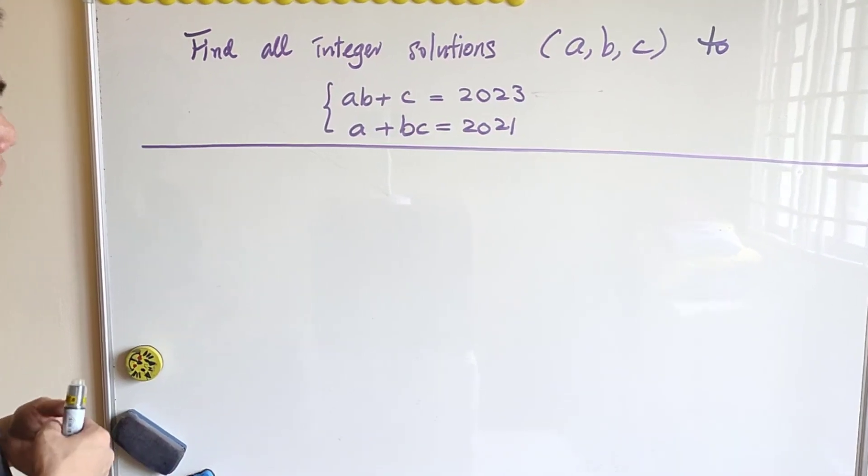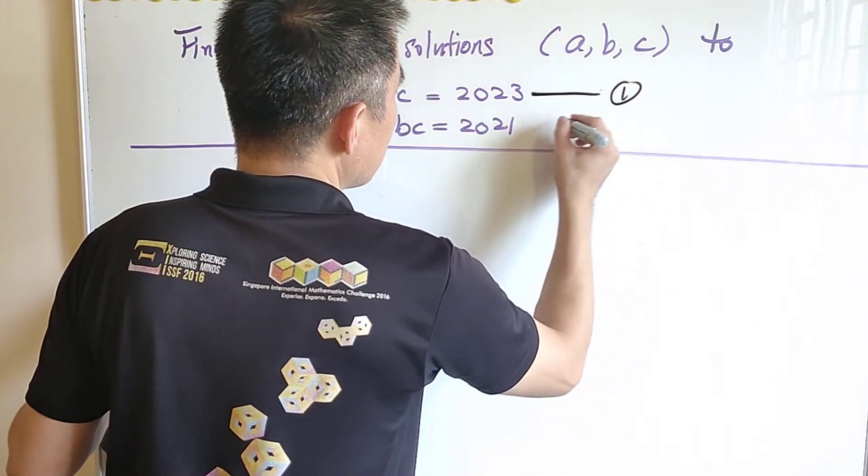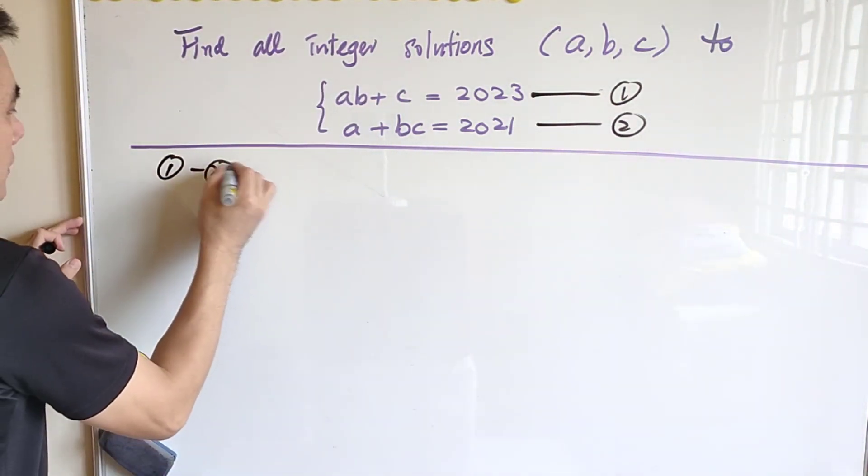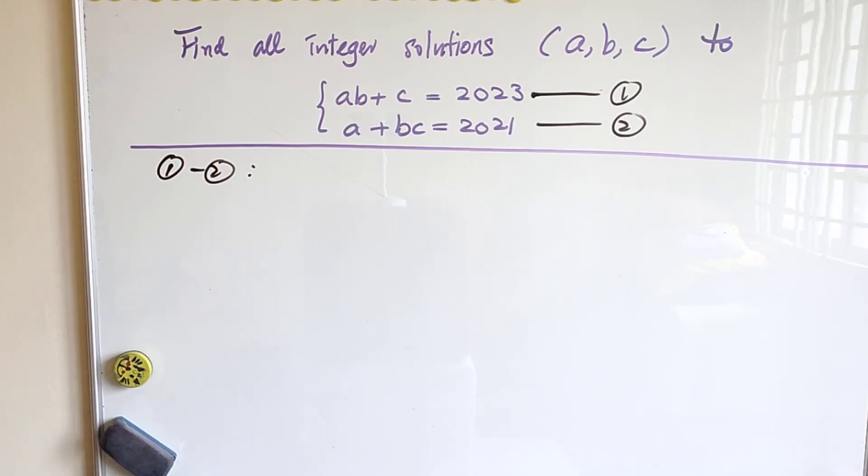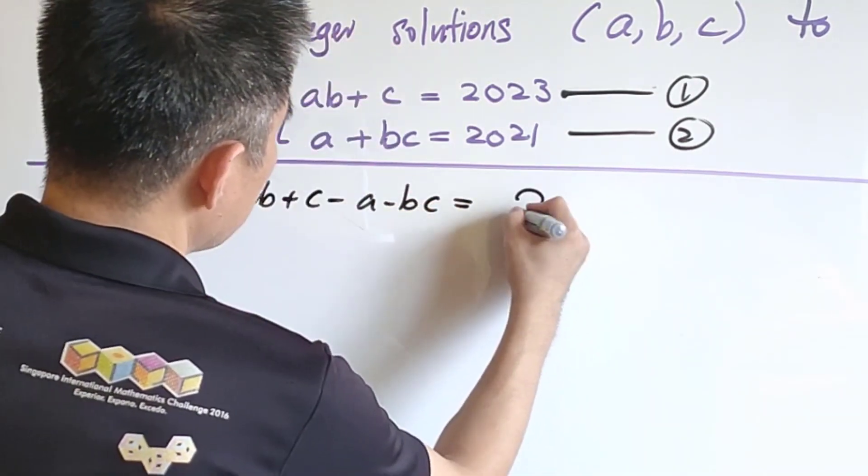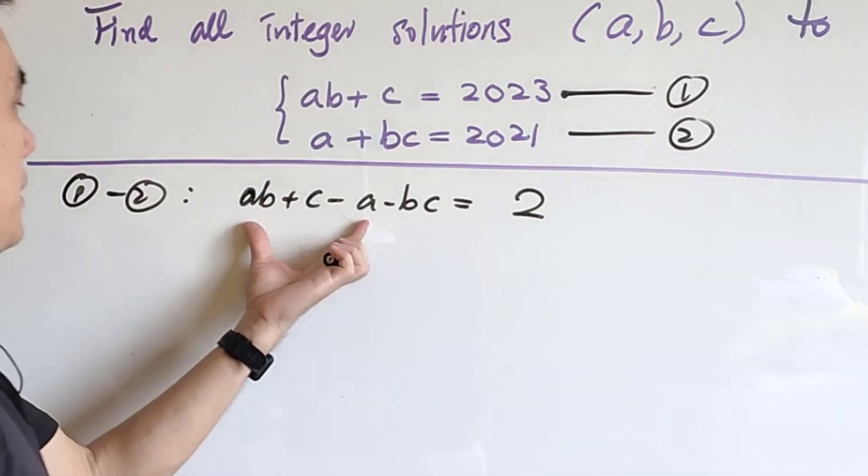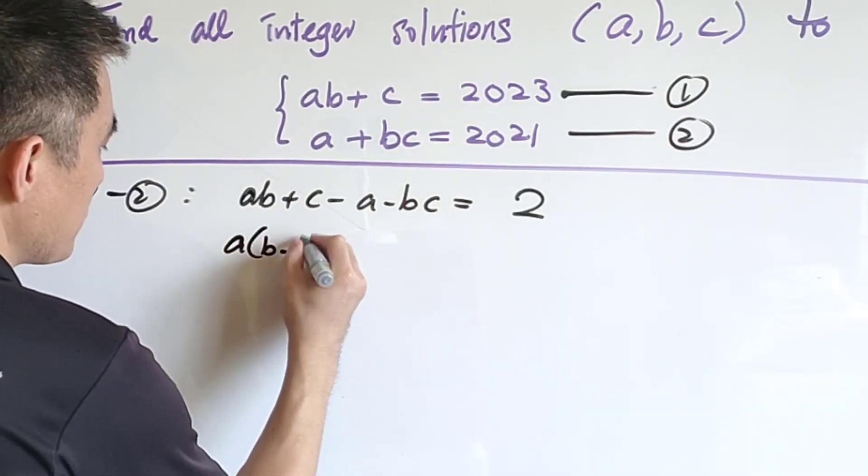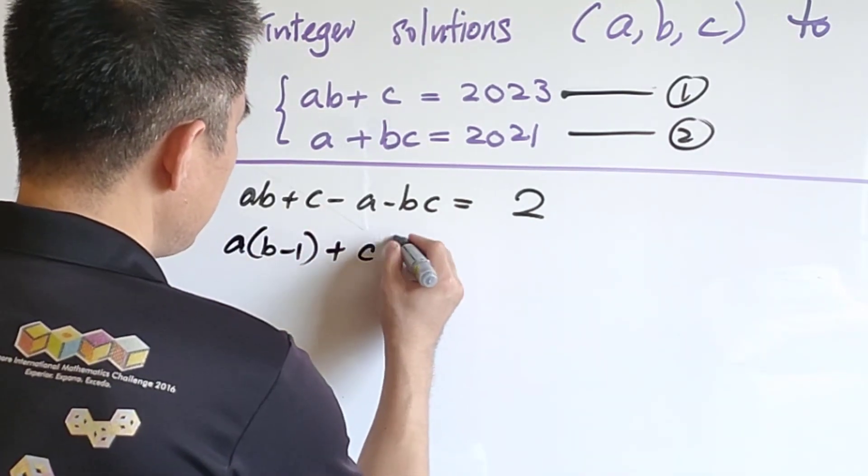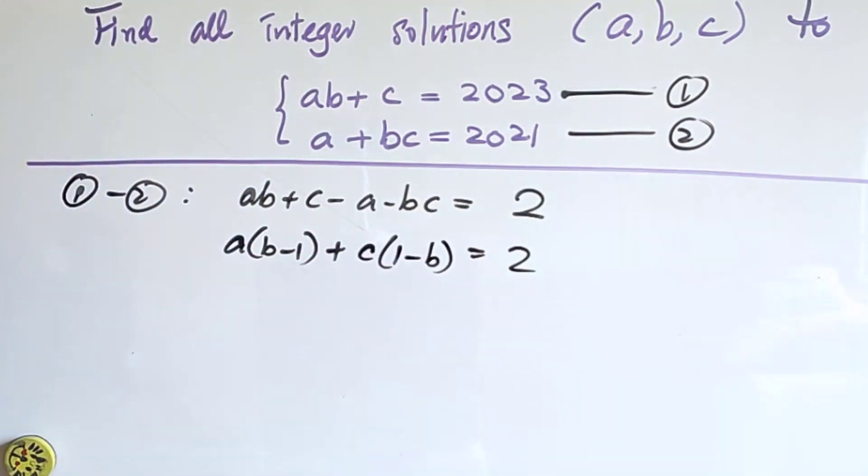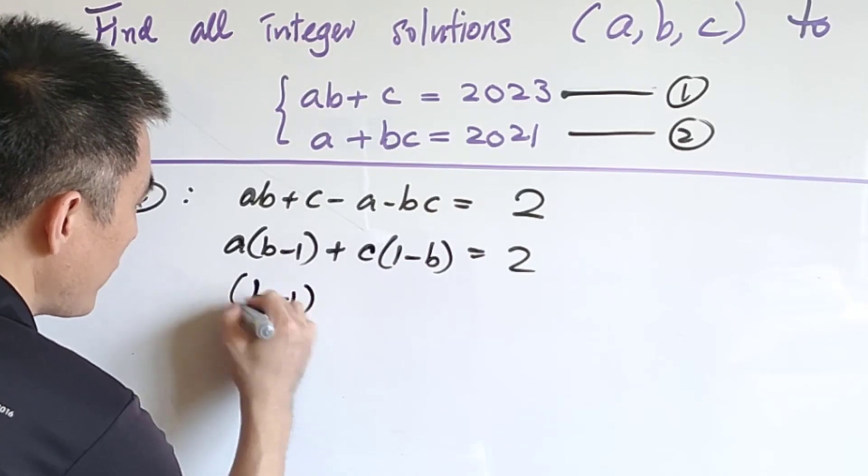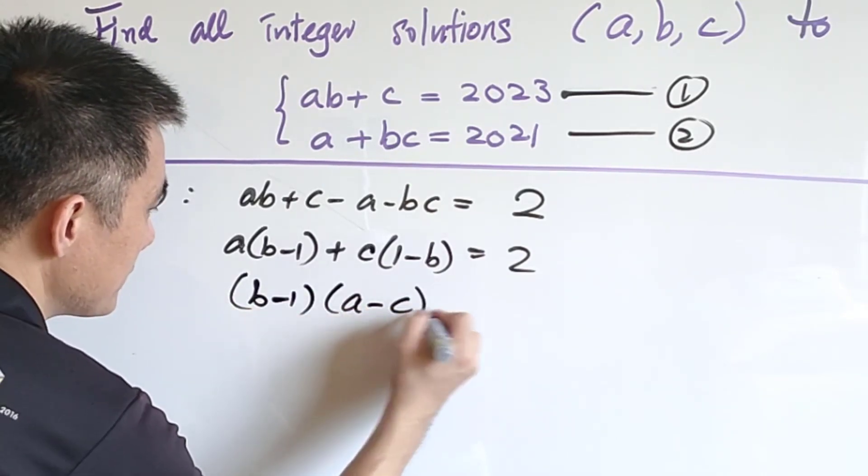The standard way of doing this calculation is to let these two equations as equation 1 and 2 respectively. Then, we may look at the difference of equation 1 and equation 2. We have AB plus C minus A minus BC equals to 2. When we combine AB minus A, we can have A(B minus 1). And when we combine C minus BC, that is C(1 minus B). We can take it out as B minus 1 and this is A minus C equals to 2.